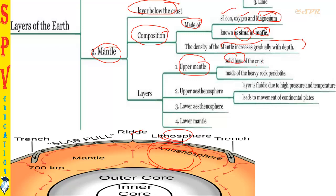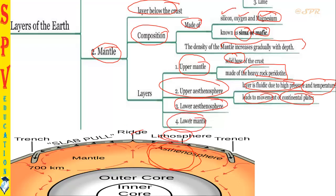The upper mantle is mostly a solid base below the crust, made of heavy rock called peridotite. Below the upper mantle lies the upper asthenosphere — this layer is fluidic due to high pressure and temperature, and it is the main reason for the movement of continental plates. Then lies the lower asthenosphere, and then the lower mantle. Clearly: crust plus upper mantle together is called the lithosphere, and below the lithosphere lies the asthenosphere, below which lies the lower mantle.